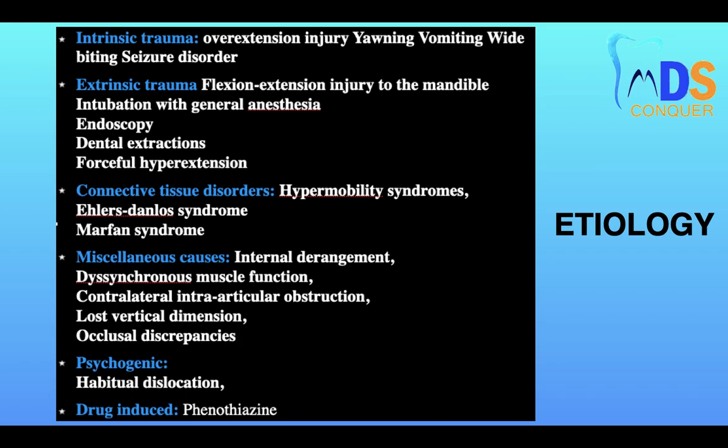Etiology can be any intrinsic trauma like overextension injury during yawning, vomiting, wide biting, or scissor disorders. Extrinsic trauma such as flexion-extension injury to the mandible, intubation, endoscopy, extraction, or forceful hyperextension can also cause dislocation. Connective tissue disorders like hypermobility syndrome, Ehlers-Danlos syndrome, and Marfan syndrome may also be responsible.